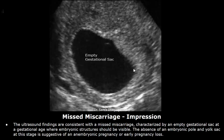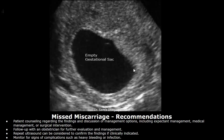This is the impression: the ultrasound findings are consistent with a missed miscarriage, characterized by an empty gestational sac at a gestational age where embryonic structures should be visible. The absence of an embryonic pole and yolk sac at this stage is suggestive of an anembryonic pregnancy or early pregnancy loss. Recommendations: patient counseling regarding the findings and discussion of management options including expectant management, medical management, or surgical intervention; follow-up with an obstetrician for further evaluation; repeat ultrasound can be considered to confirm the findings if clinically indicated; monitor for signs of complications such as heavy bleeding or infection.